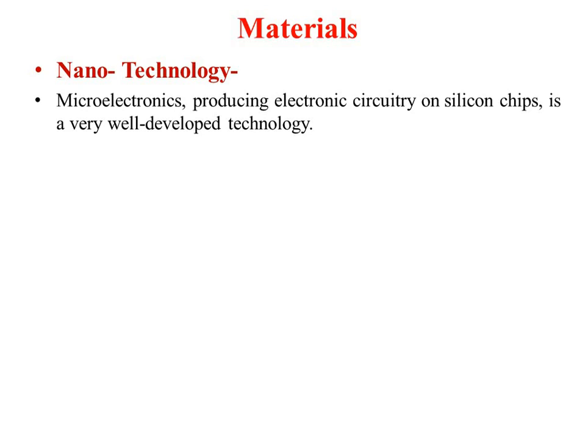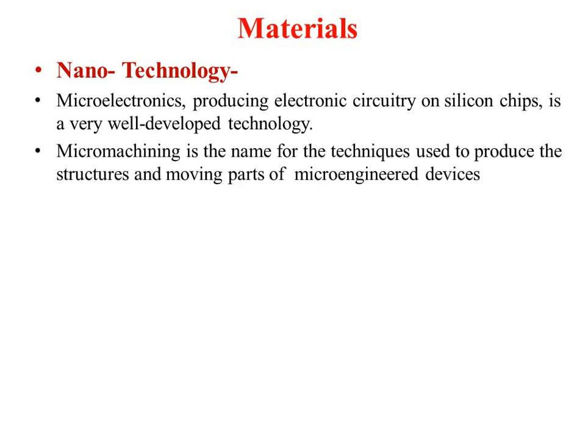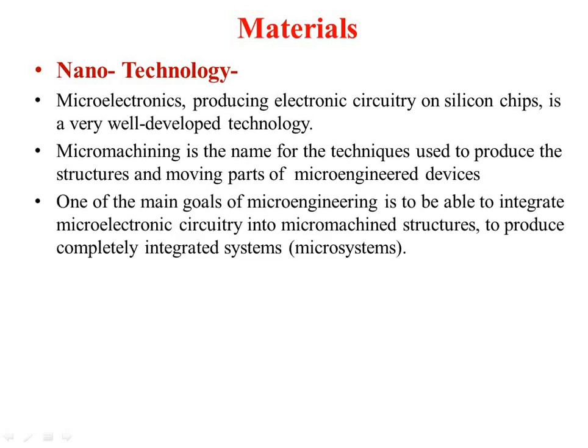Micro machining is the name used to produce structures or moving parts with micro-engine devices — if you want to manufacture a micro moving part, you use micro machining. The main goal of micro engineering is to integrate micro electronic circuitry into micro machine structures to produce complete integrated circuits called micro systems, combining micro machining parts with micro electronic circuits to produce MEMS or micro systems for sensor purposes.